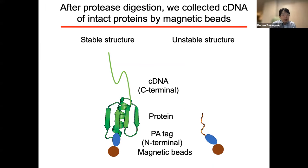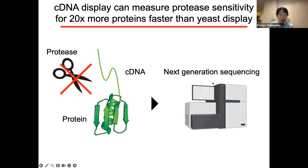That's why we can quantify the folding stability by just observing the cleavage rate by proteases. After protease digestion, we collect cDNA corresponding to intact proteins using a His-tag antibody and magnetic beads. This is because the His-tag is located at the N-terminus of the protein, while the cDNA is always attached to the C-terminus. Then we utilize next generation sequencing to analyze which proteins remain intact after protease digestion. Using the cDNA display method, protease, and next generation sequencing, we can quantify the folding stability of proteins in a very high-throughput manner.